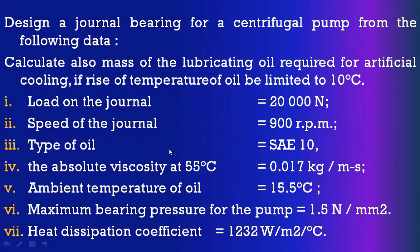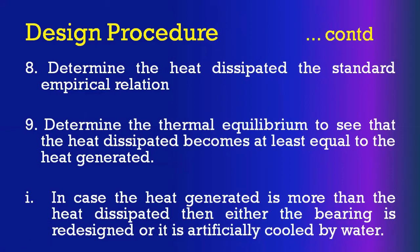To summarize the design procedure of hydrodynamic journal bearings: Step 1 — select the L/D ratio from the data book and calculate the bearing length. Step 2 — calculate bearing pressure as load divided by projected area (L × D) and check it against the standard bearing pressure for the given application.